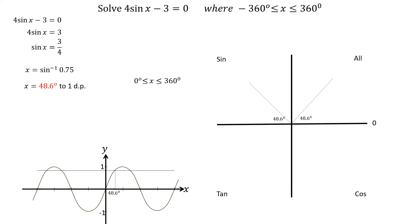Starting with x between 0 and 360 degrees, we go in an anti-clockwise direction. The first angle is at 48.6 degrees, and the second is at 180 minus 48.6 degrees, which is 131.4 degrees.